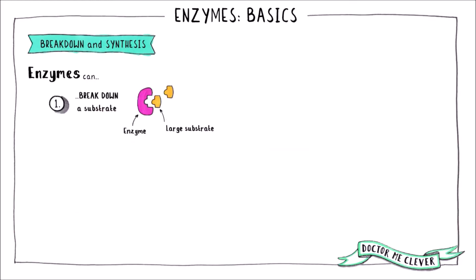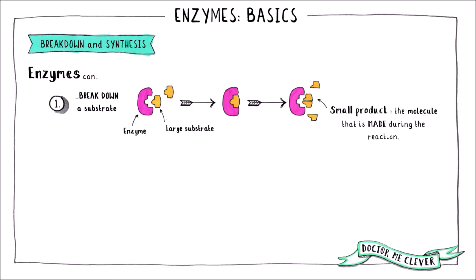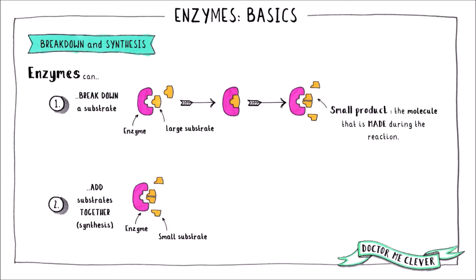Enzymes are involved in two types of reactions: those that break down large molecules such as starch, lipids and proteins to form smaller products such as maltose, fatty acids, glycerol and amino acids; and those that synthesise large products such as glycogen by adding smaller molecules such as glucose together.